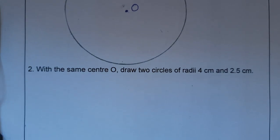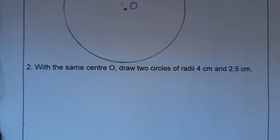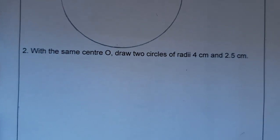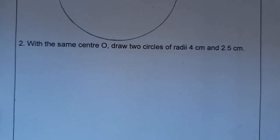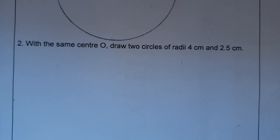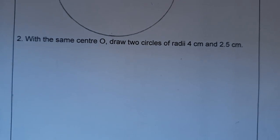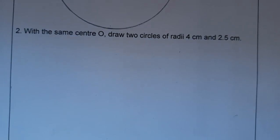With the same center O, draw two circles of radii - radii is the plural of radius. We are calling them concentric circles because they are having the same center. Two circles of radius 4 centimeter and 2.5 centimeter.